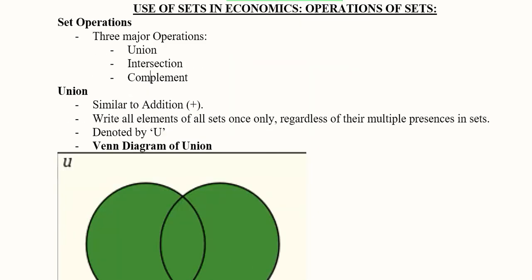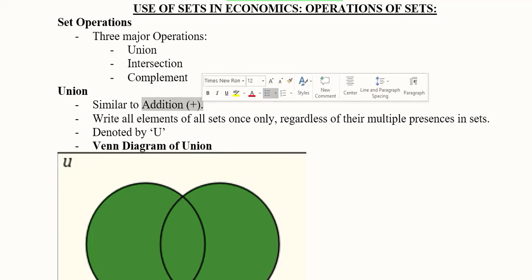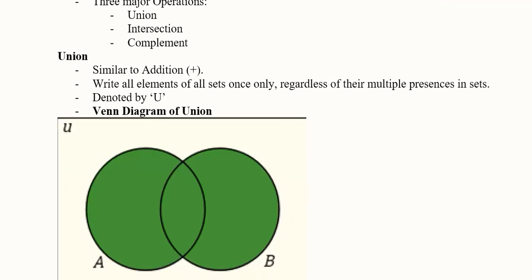We start with union which is the first one and in union we can see that it is quite similar to addition as we do in algebra. However, when we see that certain elements are being repeated between A and B that are here in this overlapping area, what we do is we write them once only and not more than once, regardless of their multiple presence in the set.